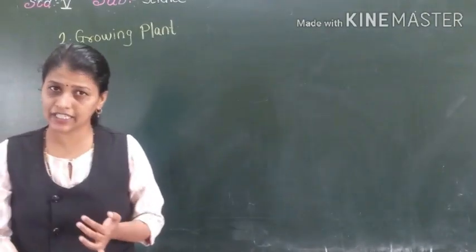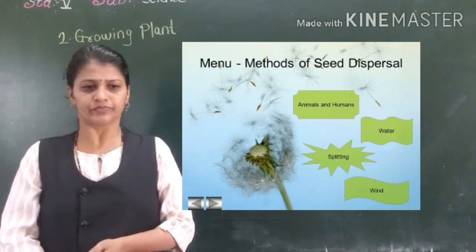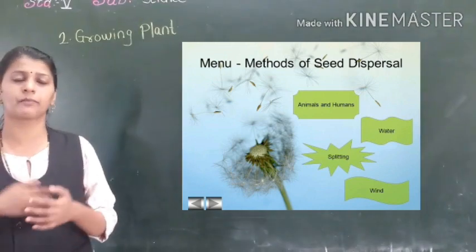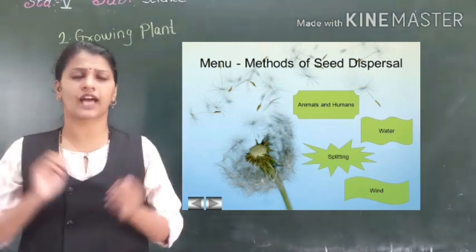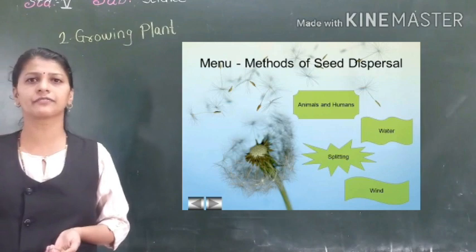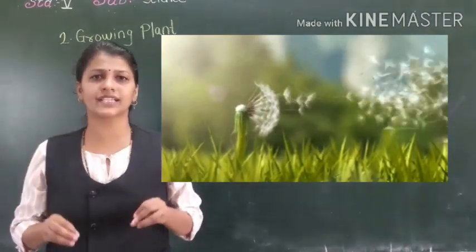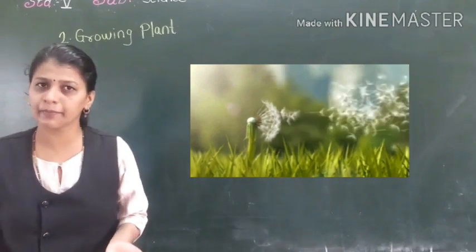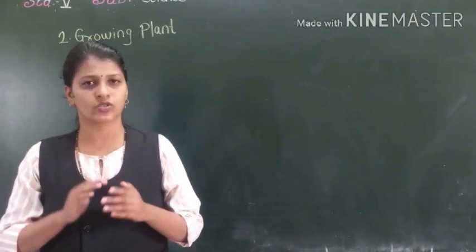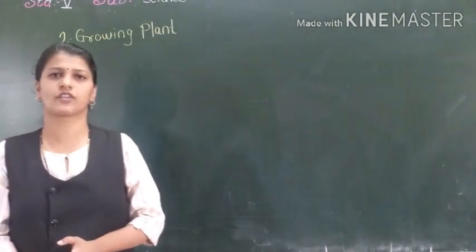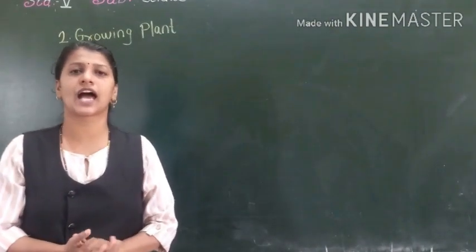Dispersion of seeds is very necessary. If all seeds fall near the mother plant, they will not get proper nutrients and water and will not grow properly. Dispersion takes place by wind — for example, cotton seeds are very light and can fly away when the air blows, germinating at another place.